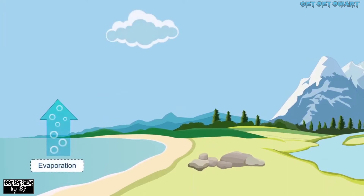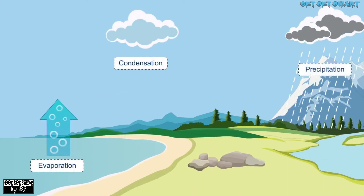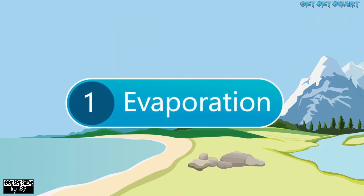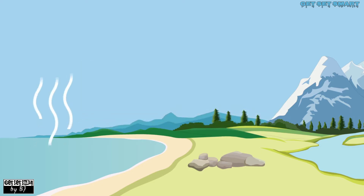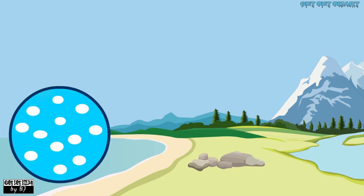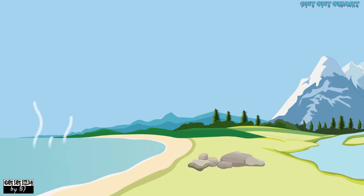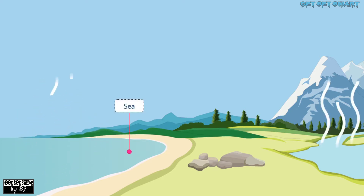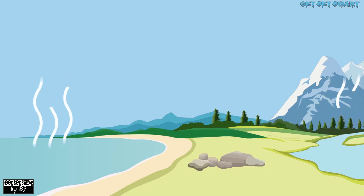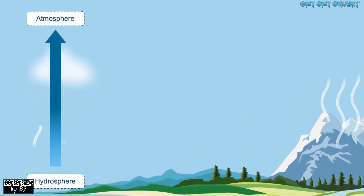The water cycle completes in five steps: evaporation, condensation, precipitation, runoff, and percolation. The water cycle starts with evaporation — a process where water at the surface turns into water vapor. Water absorbs the heat energy of the Sun and turns into vapors from various water bodies like oceans, seas, lakes, rivers, and ponds. Through evaporation, water moves from the hydrosphere to the atmosphere, and as it evaporates, it reduces the temperature of those water bodies.